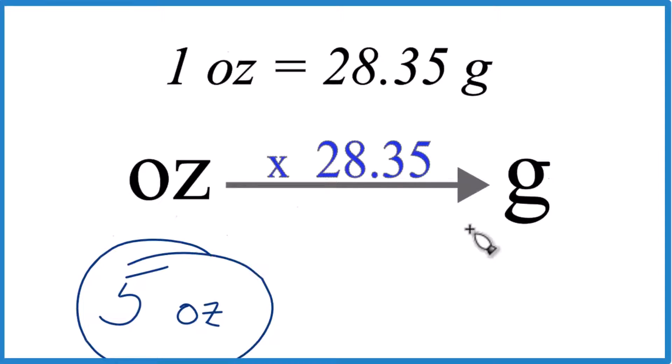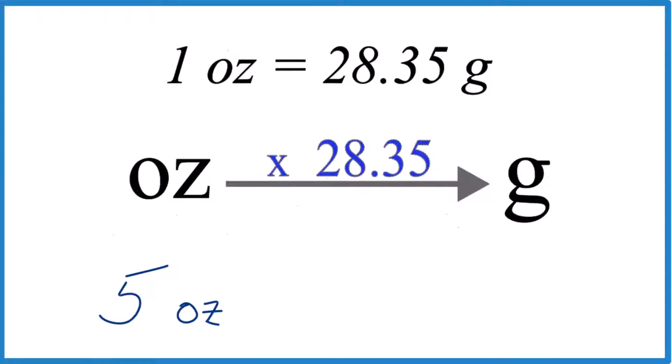Let's convert 5 ounces to grams. Here's how you do it. So 1 ounce, that's 28.35 grams. You need to know that. That's our conversion factor.